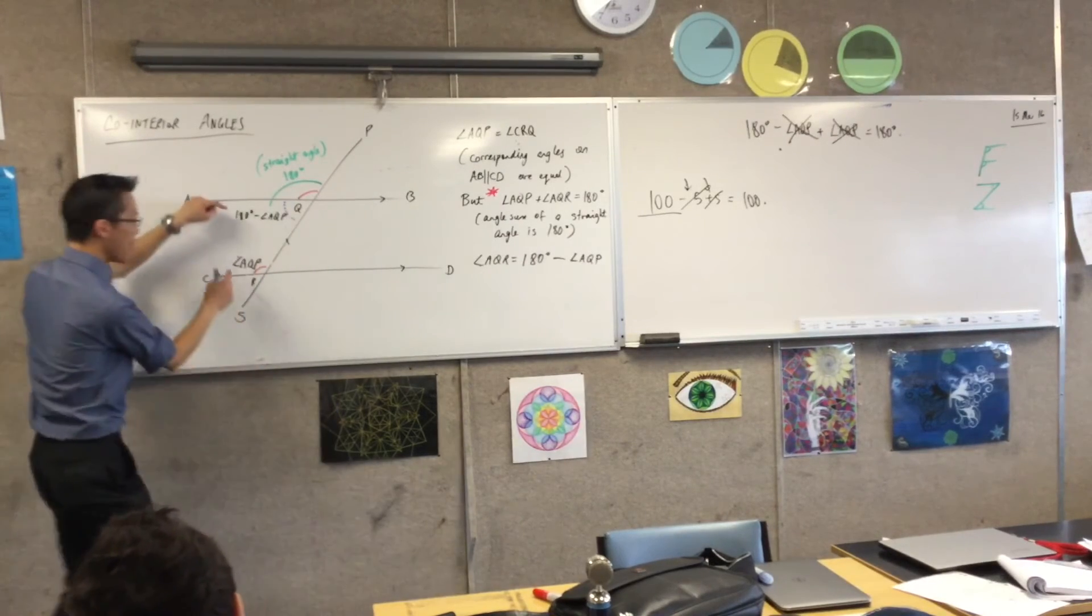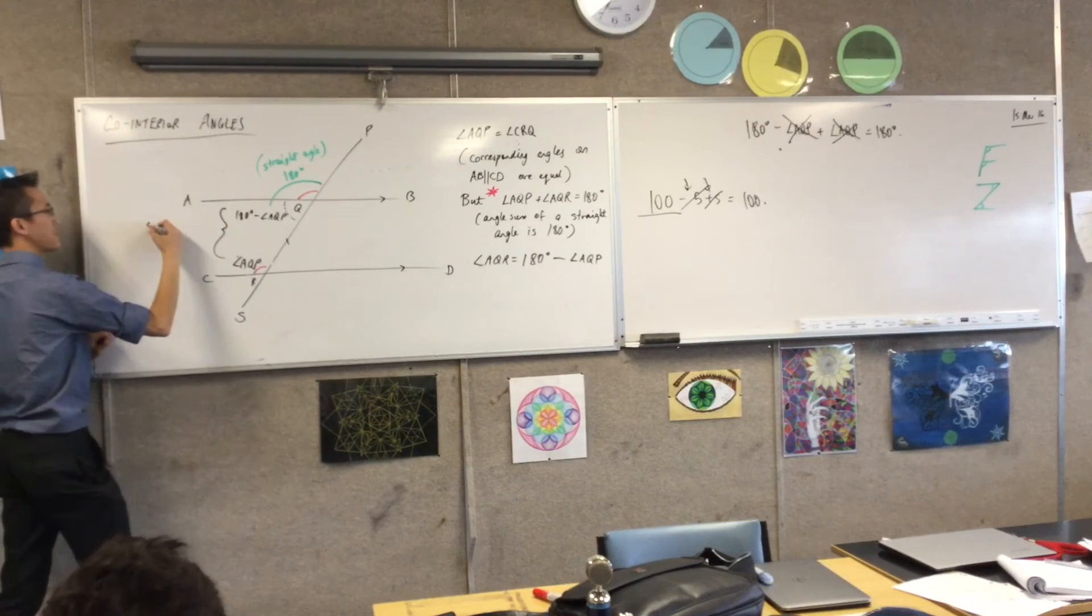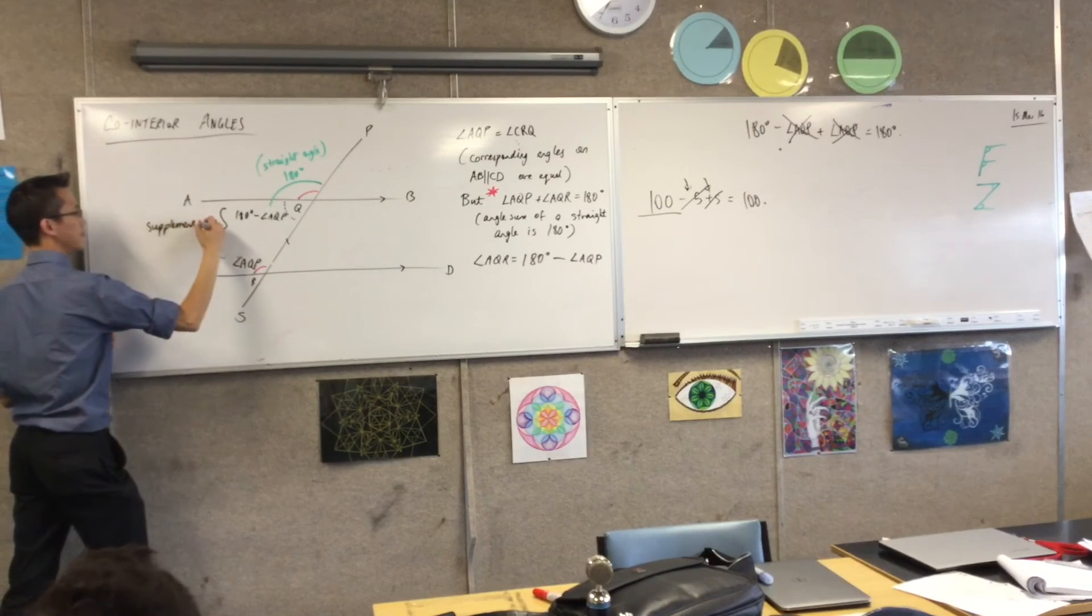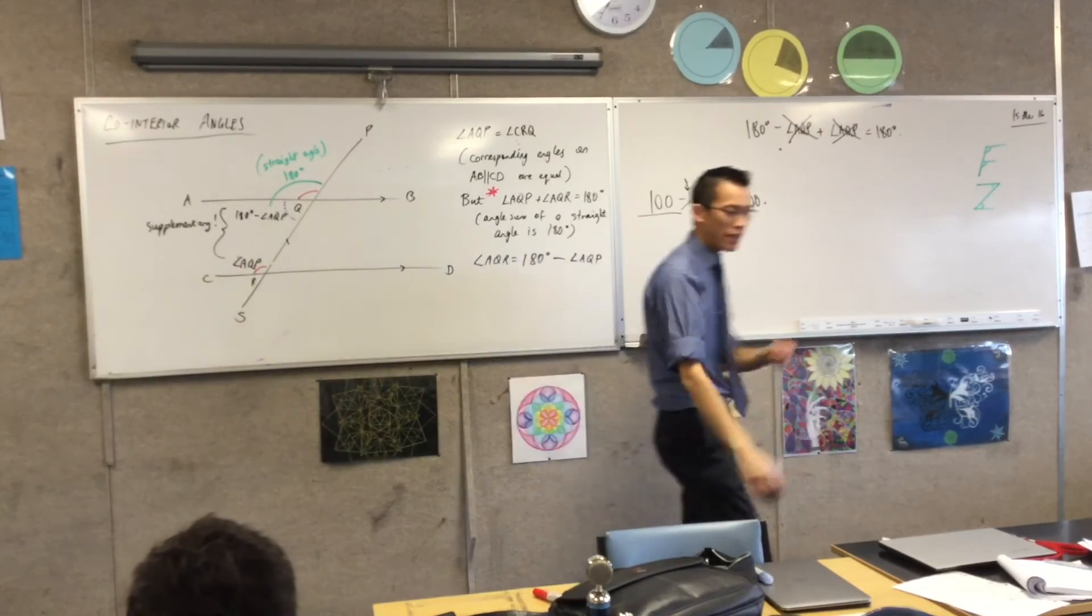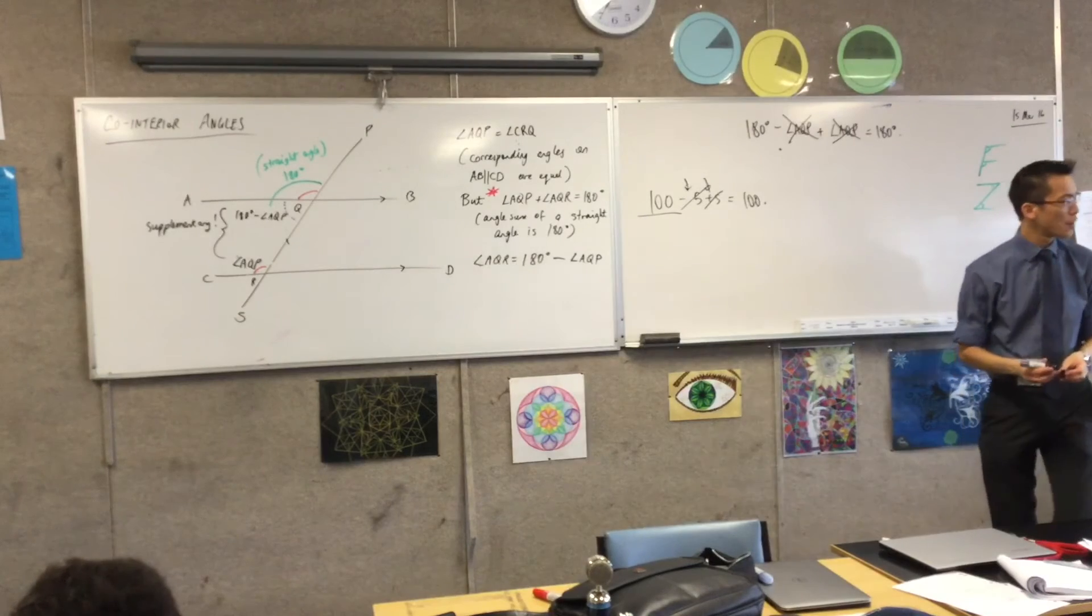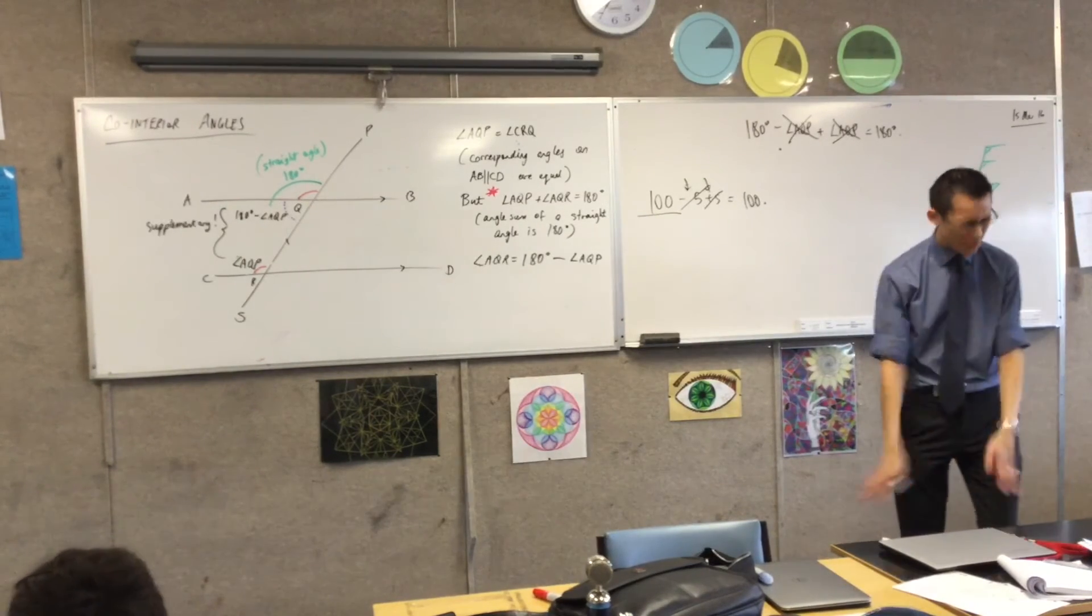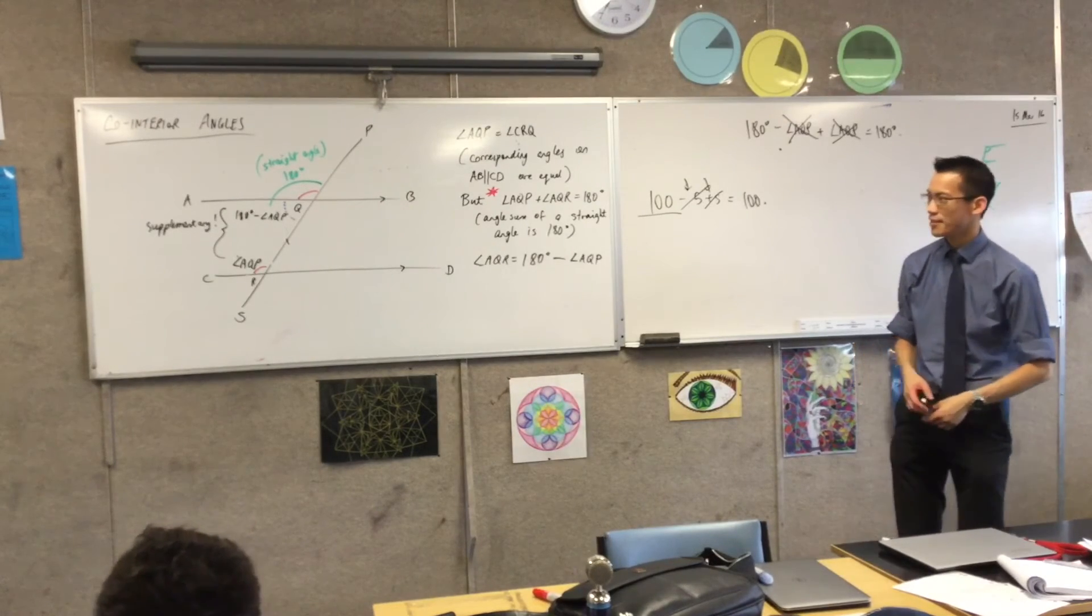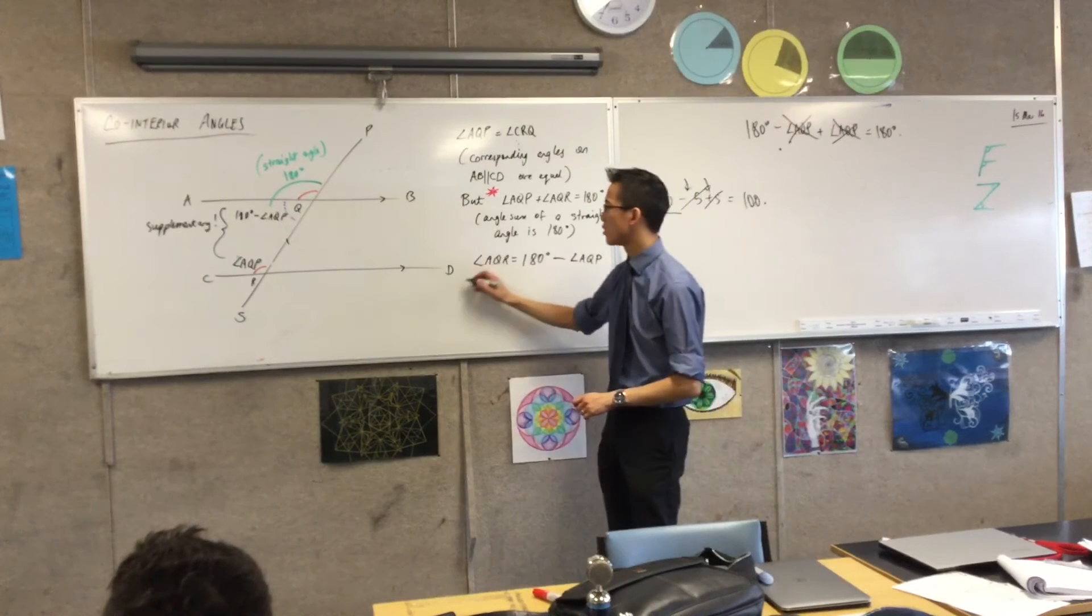Supplementary. We call these two angles supplementary. Whatever size they are, and I want you to have a look at your page. I want you to have a look at the page of the person next to you. Those two angles are always going to add up every single time to 180 degrees, okay? So, therefore, I'm going to conclude down here.